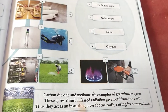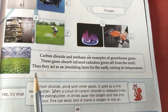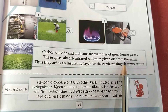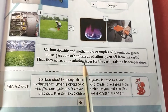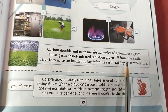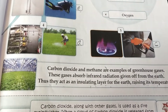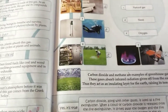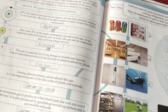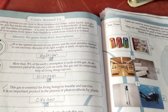Carbon dioxide and methane are examples of greenhouse gases. These gases absorb infrared radiation given off from the earth, thus they act as an insulating layer for the earth, raising its temperature. इन सब चीजों के लिए carbon dioxide और methane greenhouse gases के example हैं. हमको रोज की जीवन में जीने के लिए gases की ज़्यादा जरूरत है — बिना oxygen के हम लोग नहीं जी सकते हैं. Okay kids, complete this in your book.